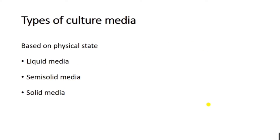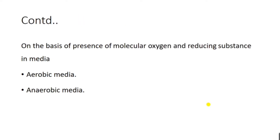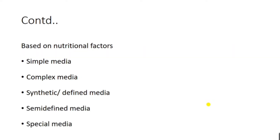Based on physical state, culture media are classified into liquid media, semi-solid media, and solid media. On the basis of the presence of molecular oxygen and reducing substances, they are divided into aerobic media and anaerobic media. Based on nutritional factors, they are divided into simple media, complex media, synthetic or defined media, semi-defined media, and special media.